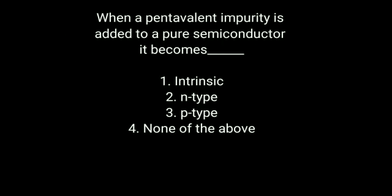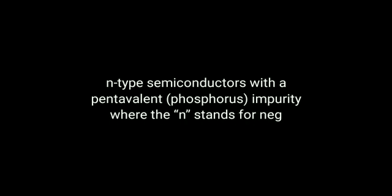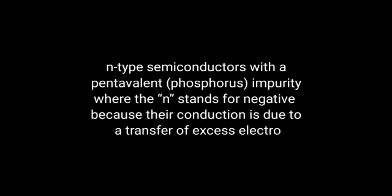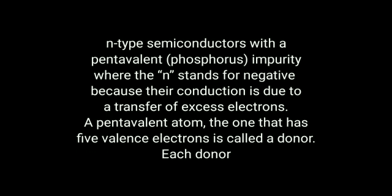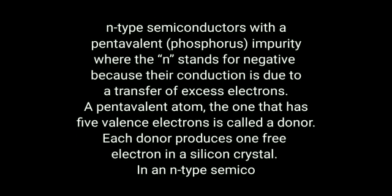Next question: When a pentavalent impurity is added to a pure semiconductor, it becomes blank. Option 1: Intrinsic. Option 2: Anti. Option 3: P-type. Option 4: None of the above. Answer is N-type. N-type semiconductor uses a pentavalent impurity such as phosphorus, where N stands for negative because conduction is due to transfer of excess electrons. A pentavalent atom with 5 valence electrons is called a donor; each donor produces 1 free electron in a silicon crystal.